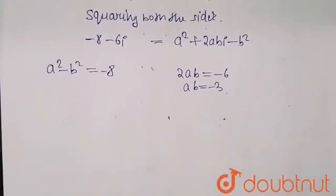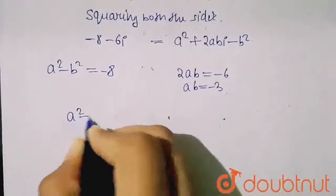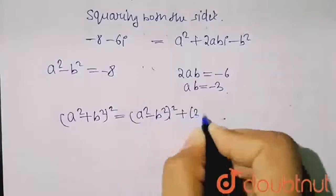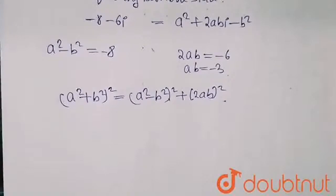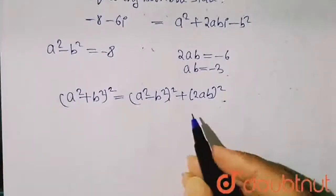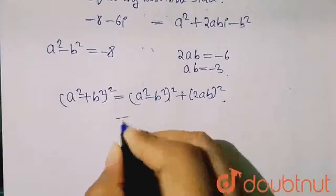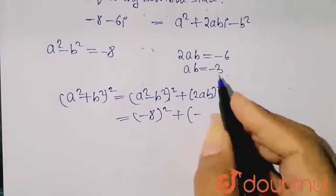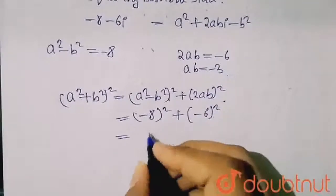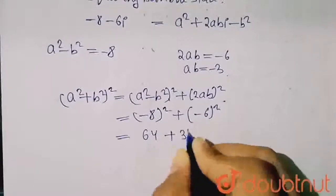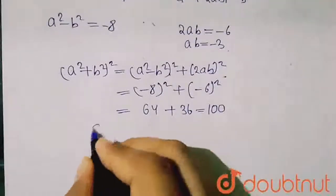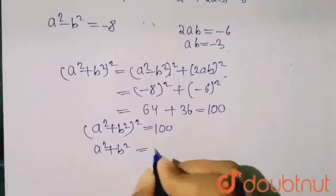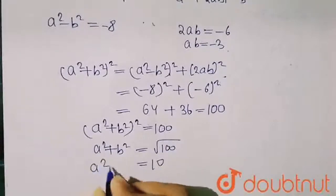So here what can I do? I can find A squared plus B squared using the formula: A squared plus B squared whole squared equals A squared minus B squared whole squared plus 2AB whole squared. So A squared minus B squared is minus 8, whole squared, plus 2AB is minus 6, whole squared. That gives 64 plus 36 equals 100. So A squared plus B squared whole squared equals 100, which means A squared plus B squared equals 10.